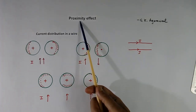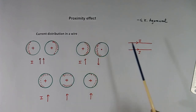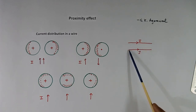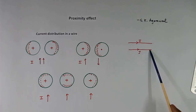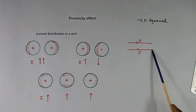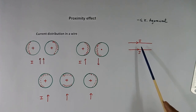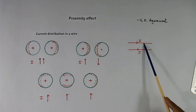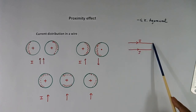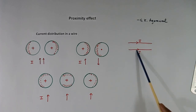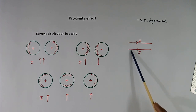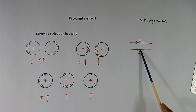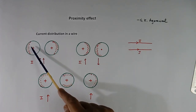Now we will learn what proximity effect is. Suppose there are two wires and AC current is flowing in both wires. Because the current is AC, it will induce an EMF in the other wire because of proximity — because they are closer to each other. Similarly, the current in that wire will induce EMF in this wire. Because of this induced EMF, eddy current will flow in both wires, and current will not flow in the full area.